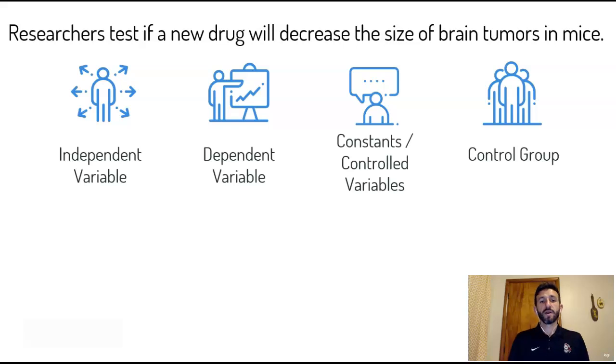Alright, so here is an example. Let's try this out. Researchers test if a new drug will decrease the size of brain tumors in mice. So what's the independent variable here? What are the researchers doing? Well, they're trying to administer or give this drug, this tumor-preventing drug. The drug is the independent variable. What are they observing for? To see if this works, is the size of the brain tumors change as a result of the drug.